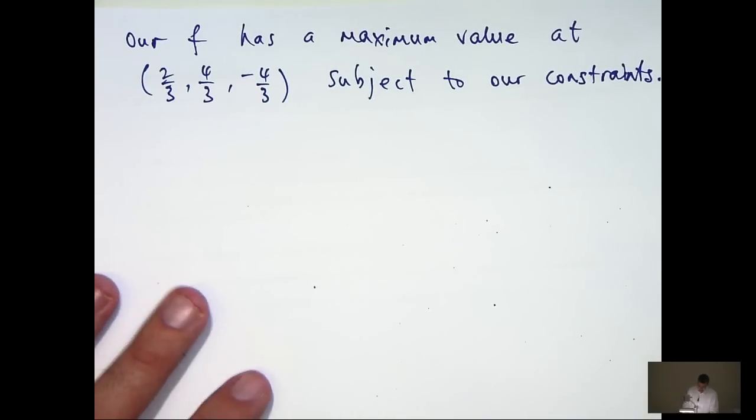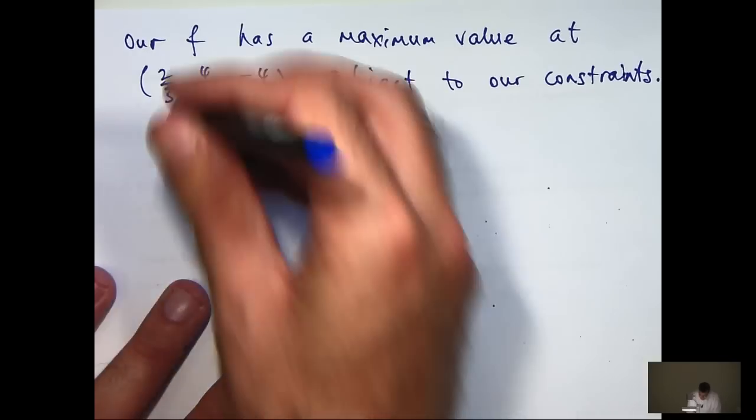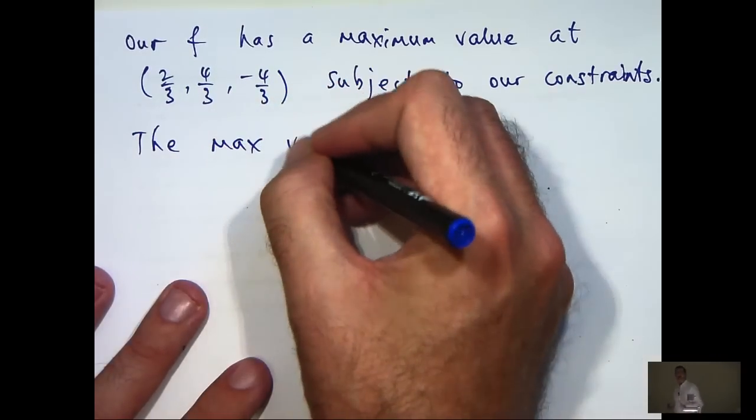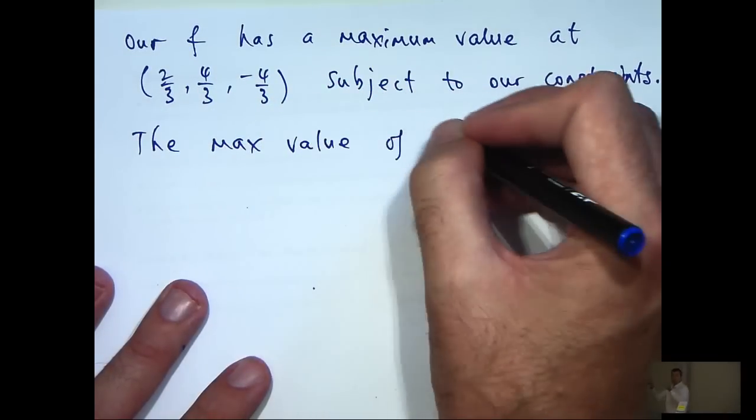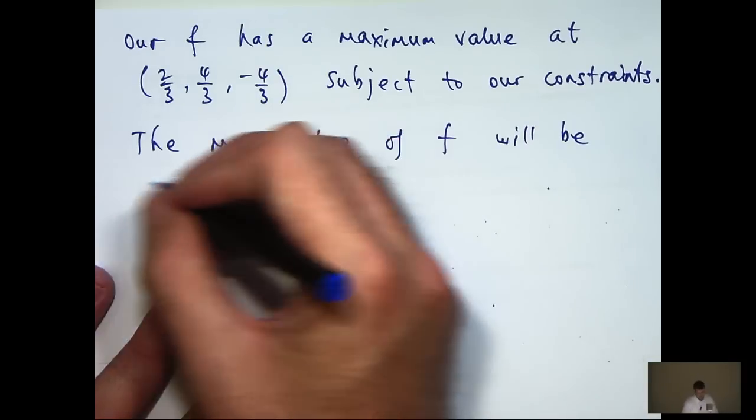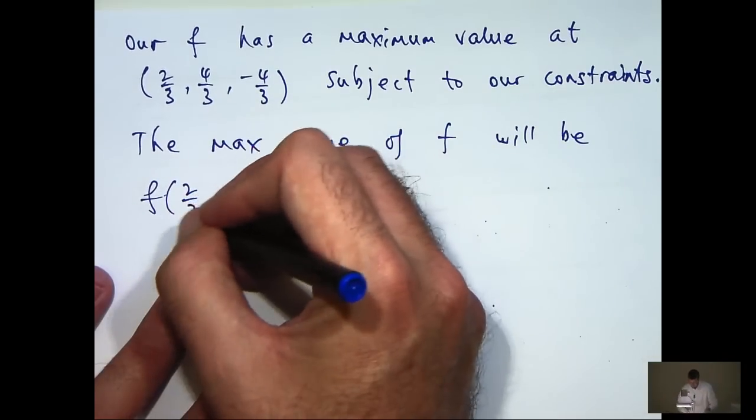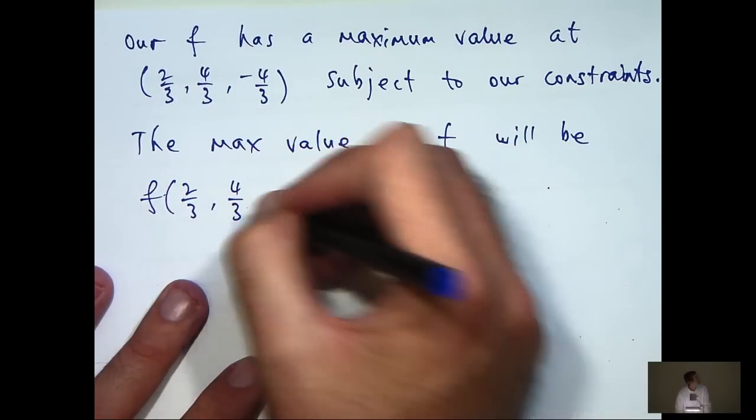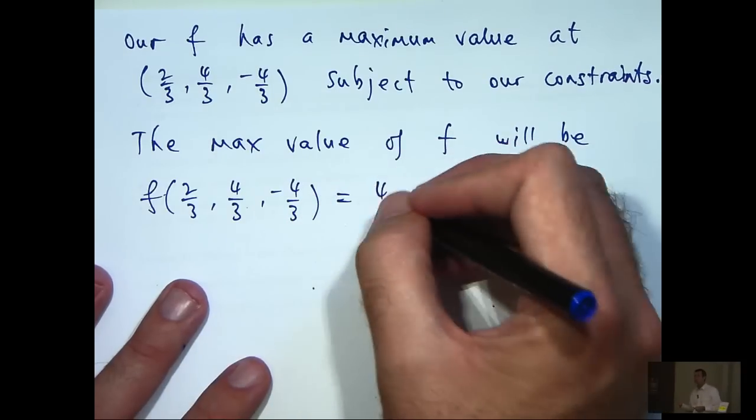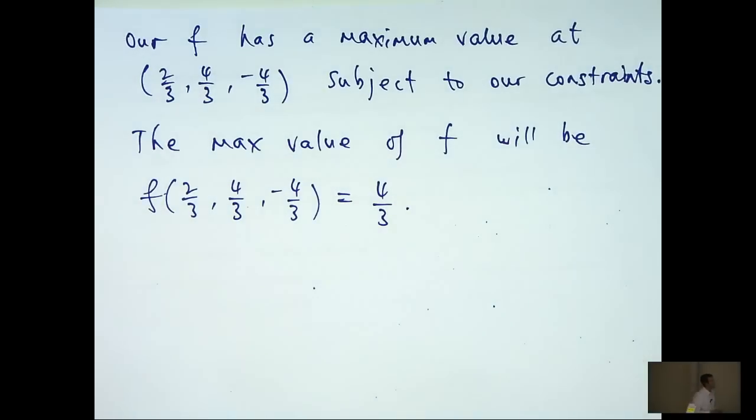Now, what is the maximum value of f at this point? Well, what is the value of f, I guess? Well, if you go back to your f and just evaluate it at this point, you'll get 4 thirds. Now, that's the question finished.